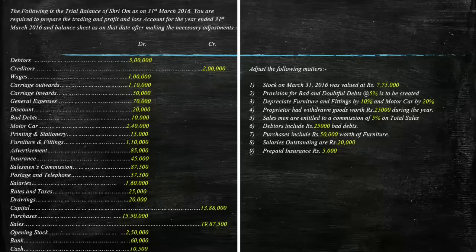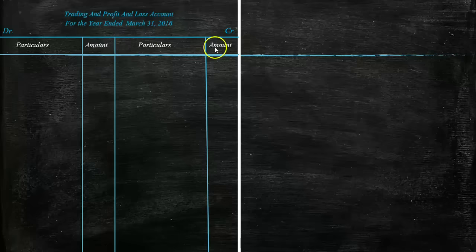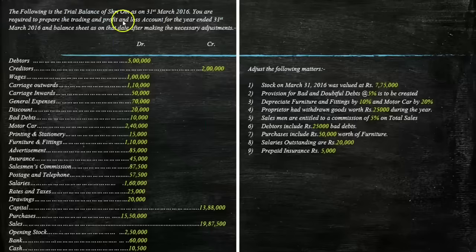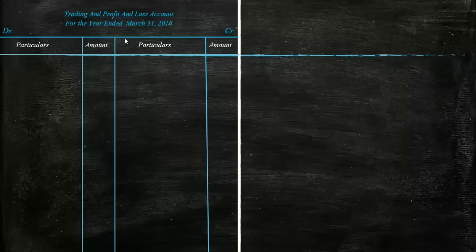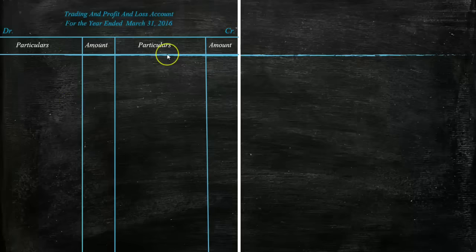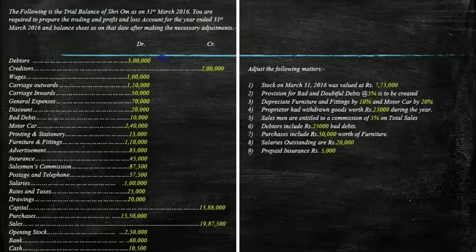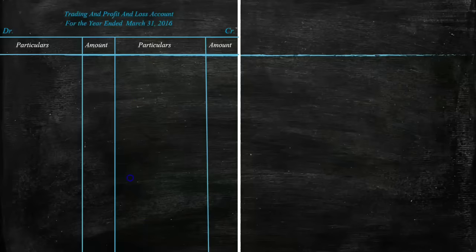Let's prepare the trading and profit and loss account first. We draw the T-format with particulars and amount columns on both debit and credit sides, and write the heading for the year ended 31st March 2016. The trading account always starts with opening stock on the debit side. Here, opening stock is equal to Rs. 2,50,000. Therefore we write 'To Opening Stock Rs. 2,50,000'.